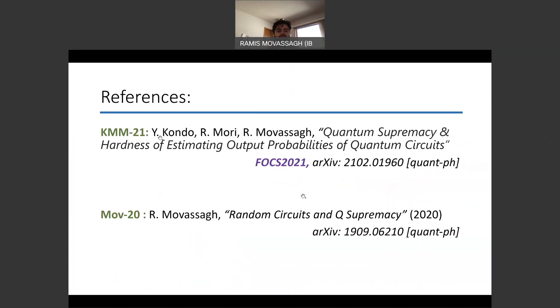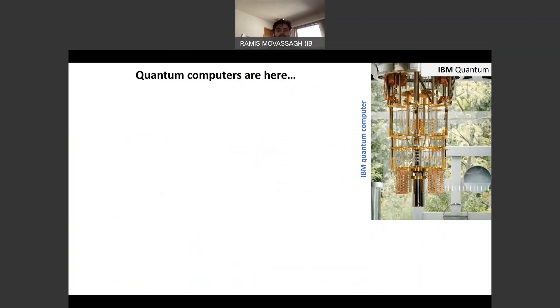These are the two references. KMM21 is indeed this FOCS talk with the same title, and some of the previous work that will be used are in this paper that I'll refer to as MOV20, random circuits and quantum supremacy.